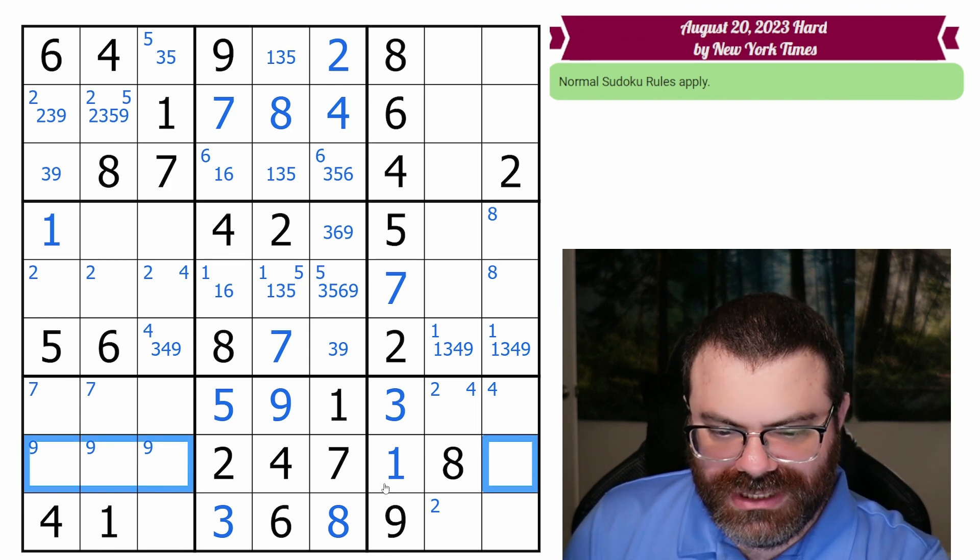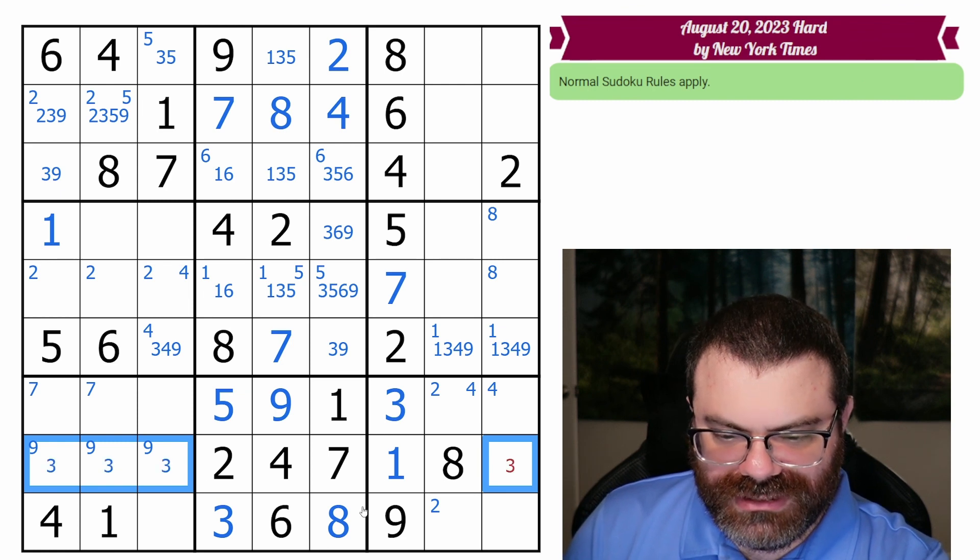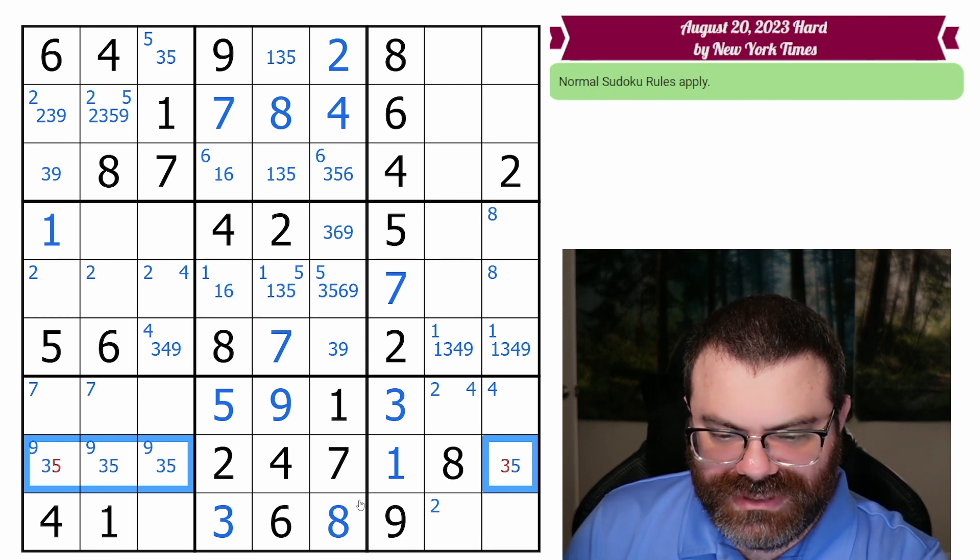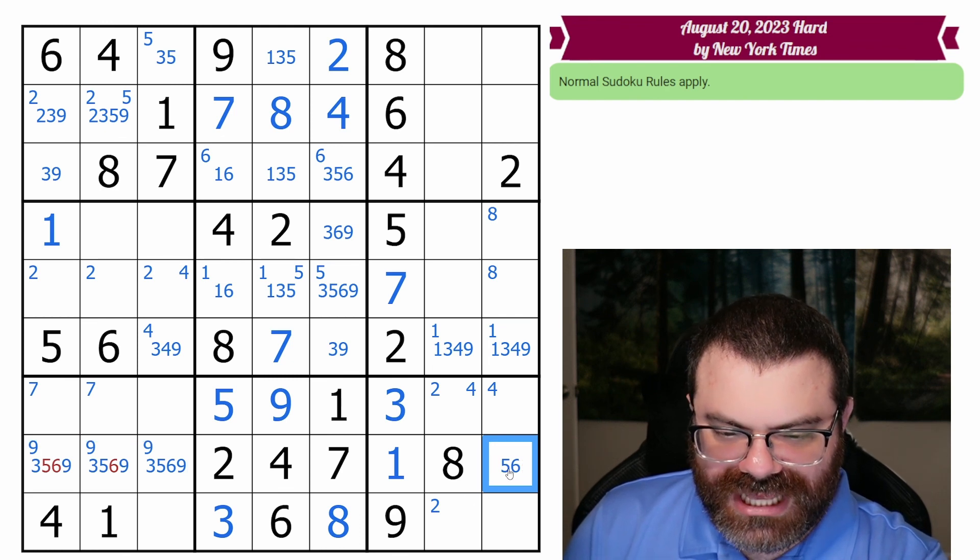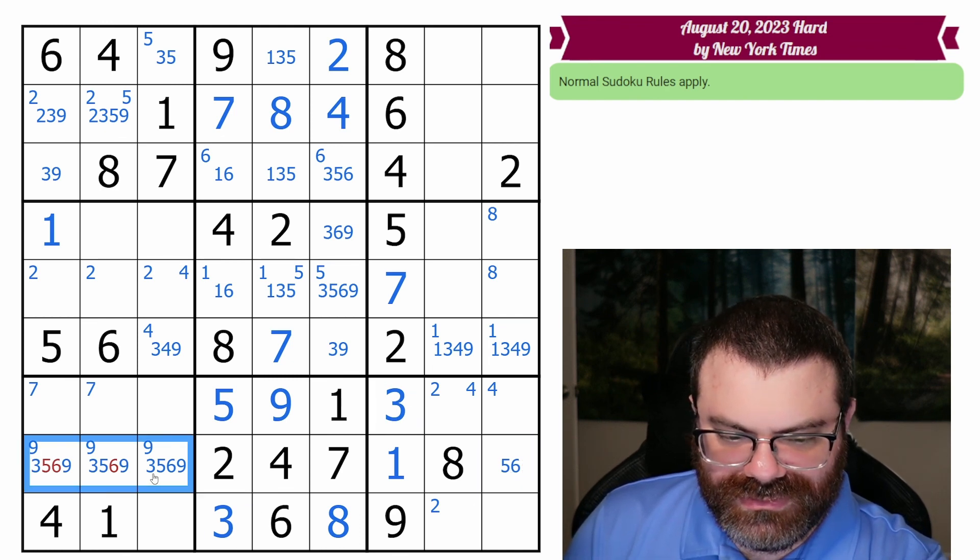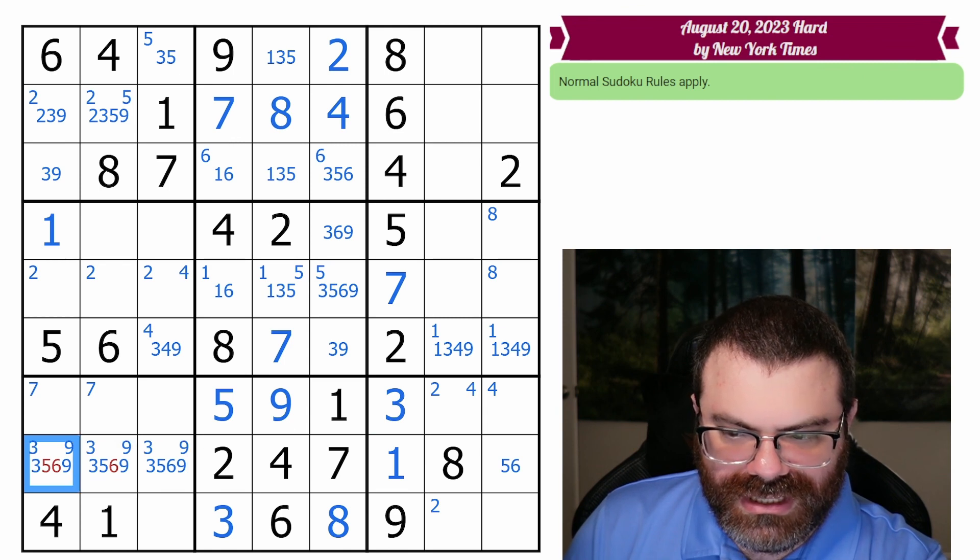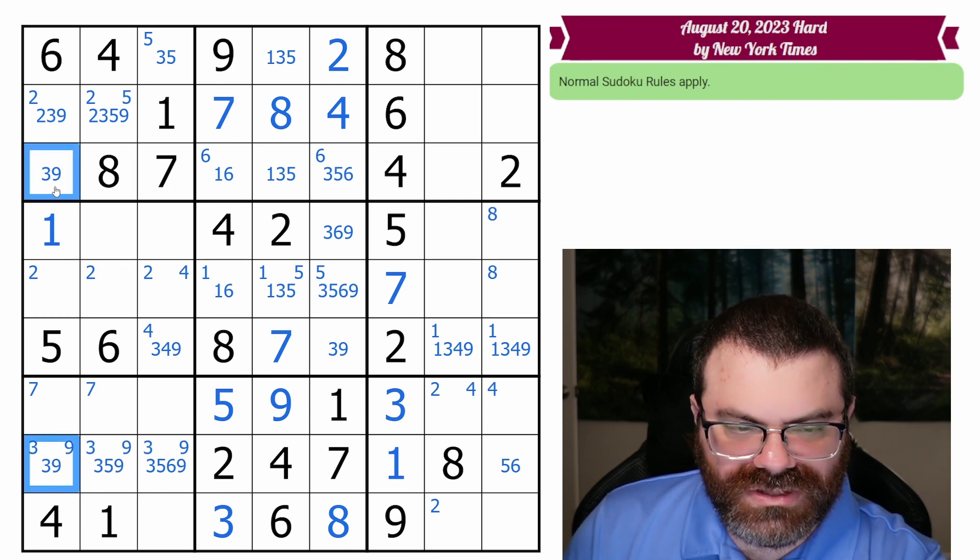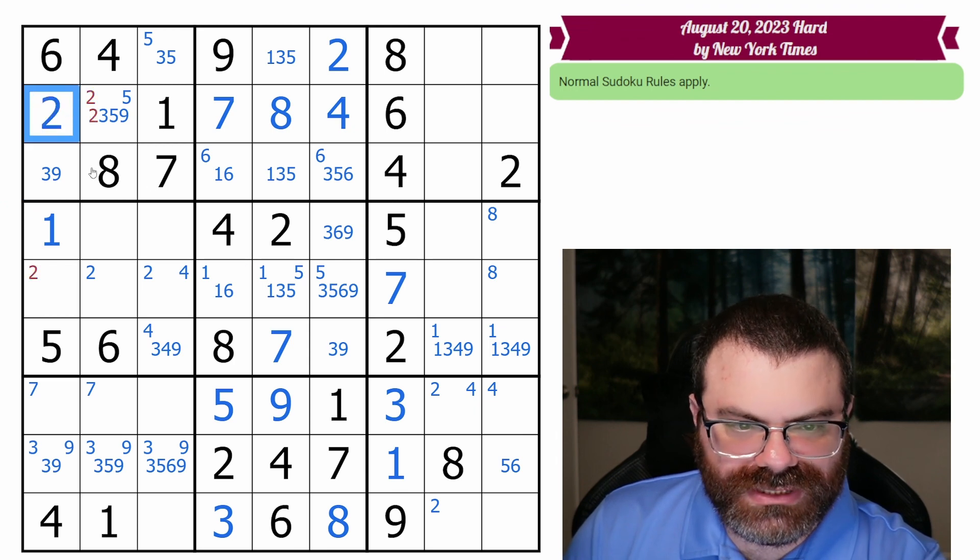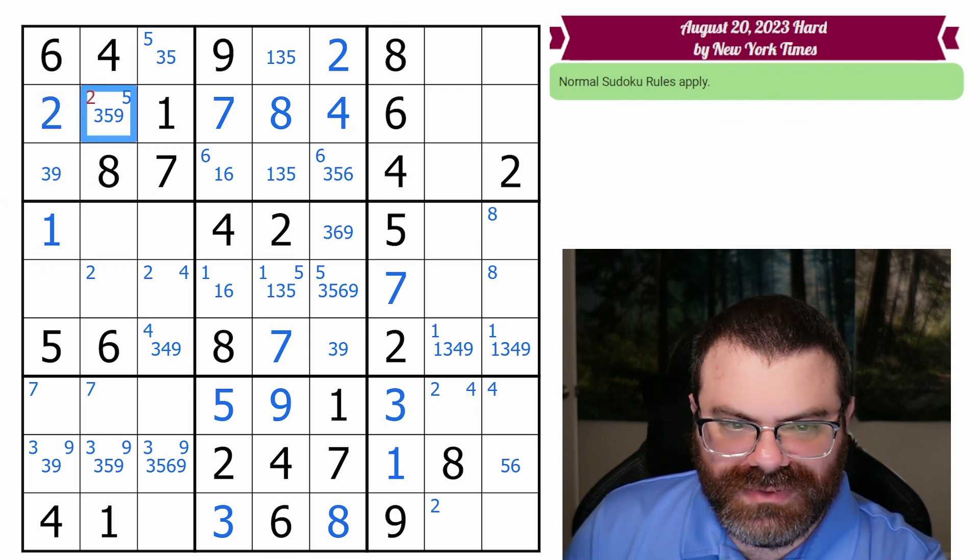Maybe this row is helpful, because we have one, two. We need three, five, six, and nine. So now that we actually have some threes placed, we know the threes over here with the nine. This is not five or six for the column. Oh, so that's a three, nine pair. So that gives us the two. That's nice.